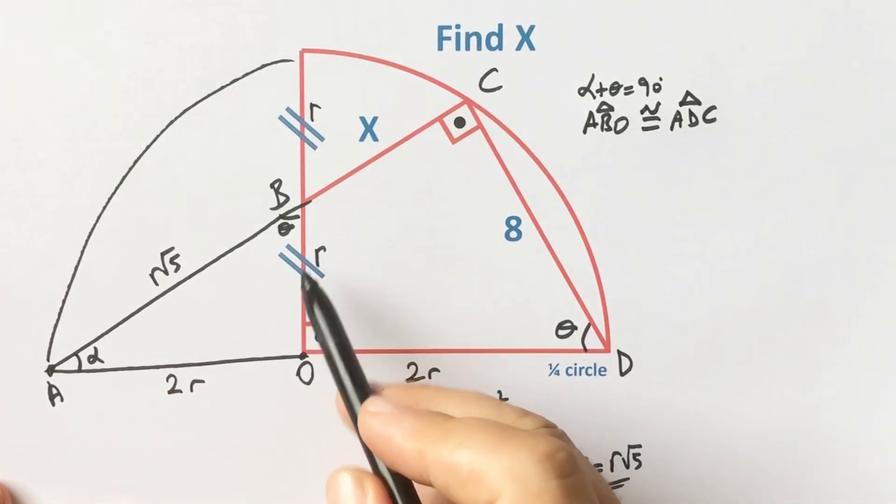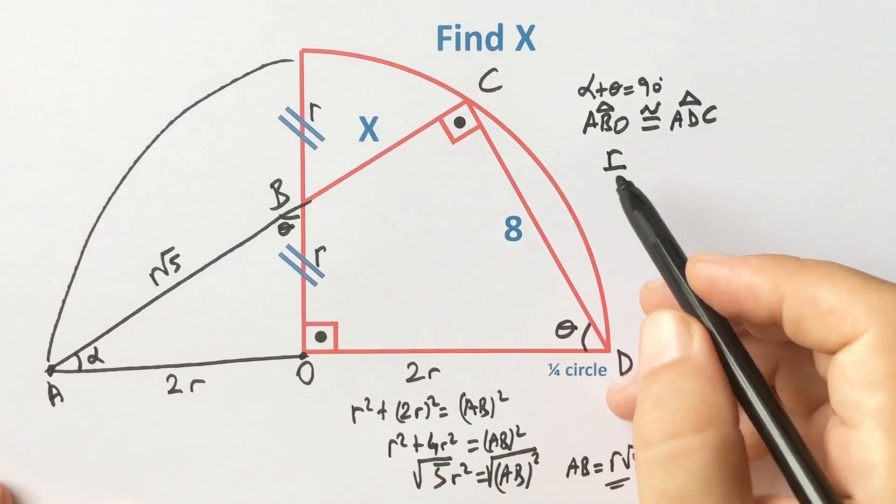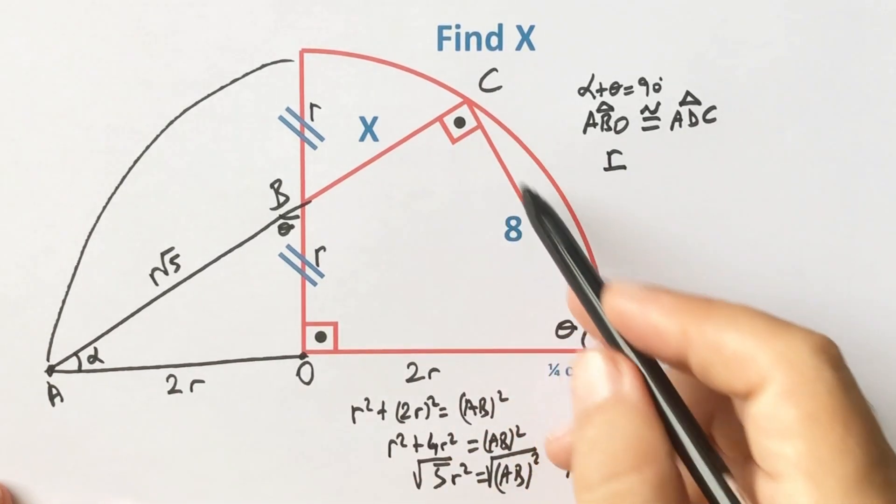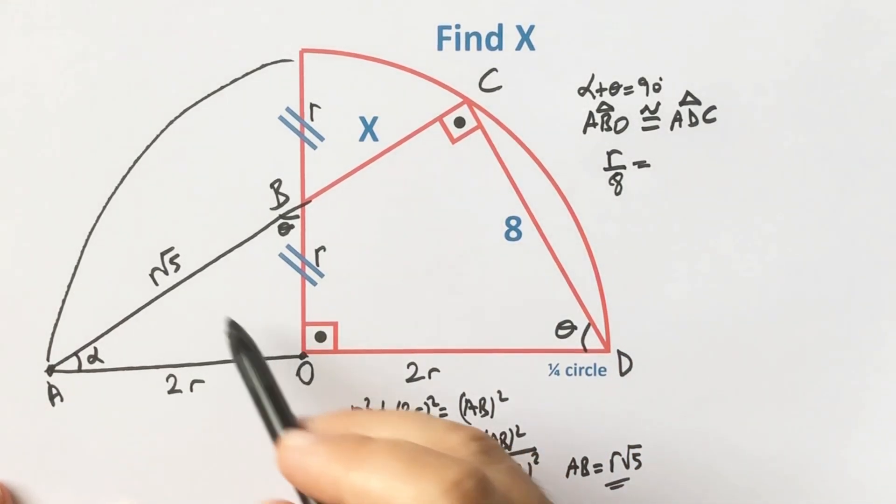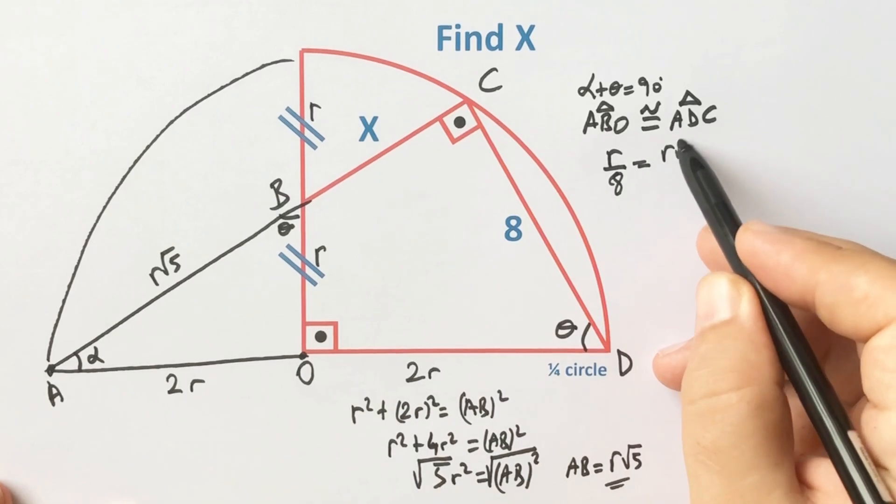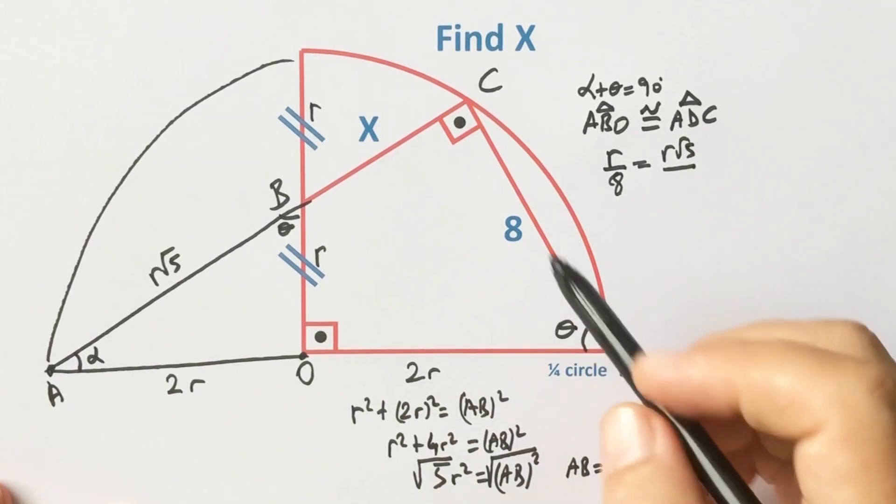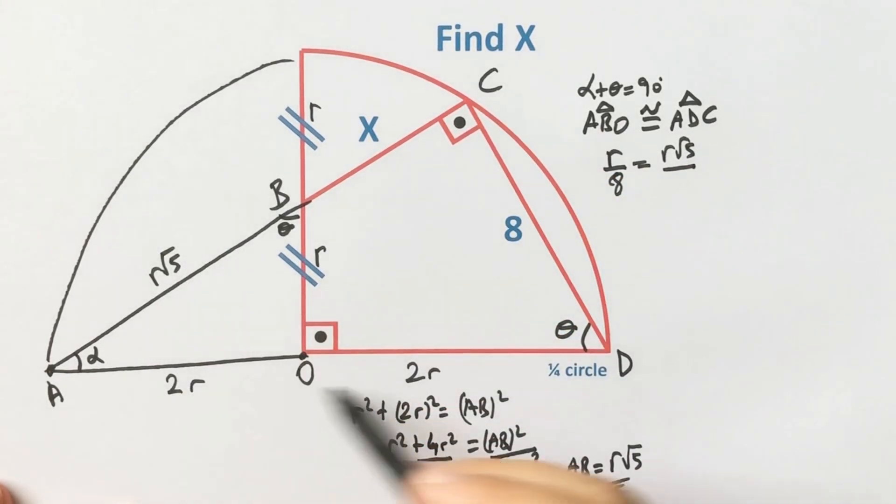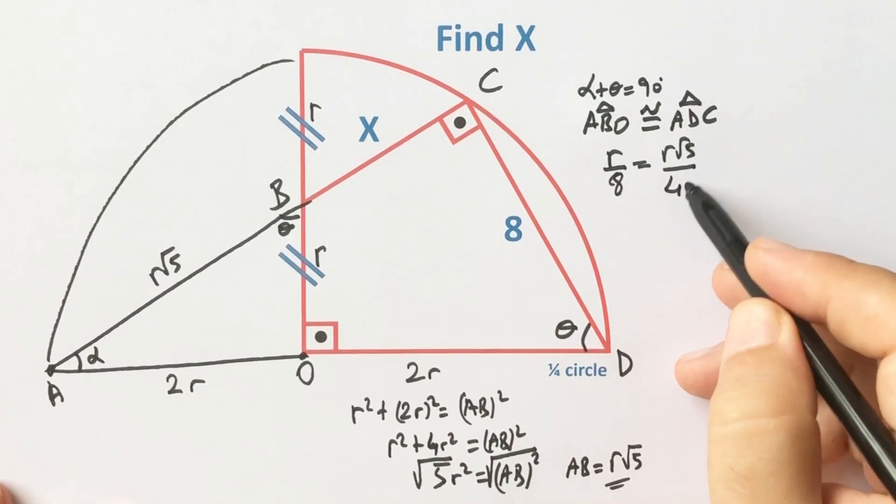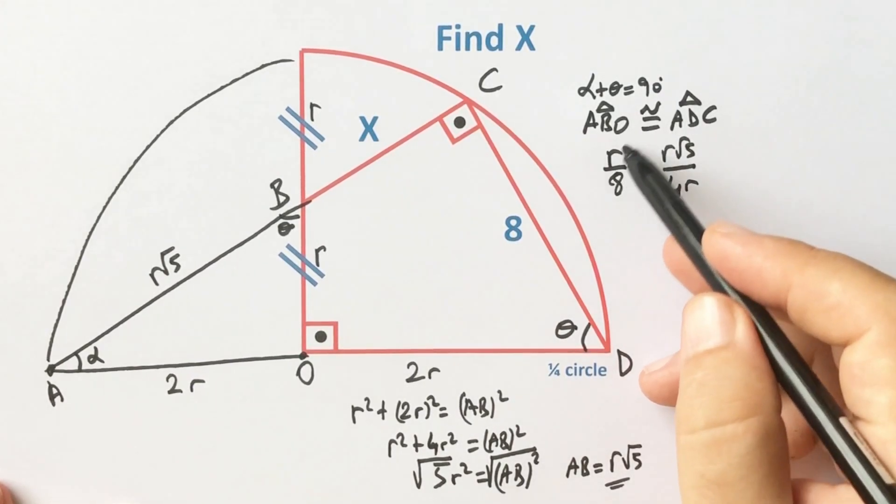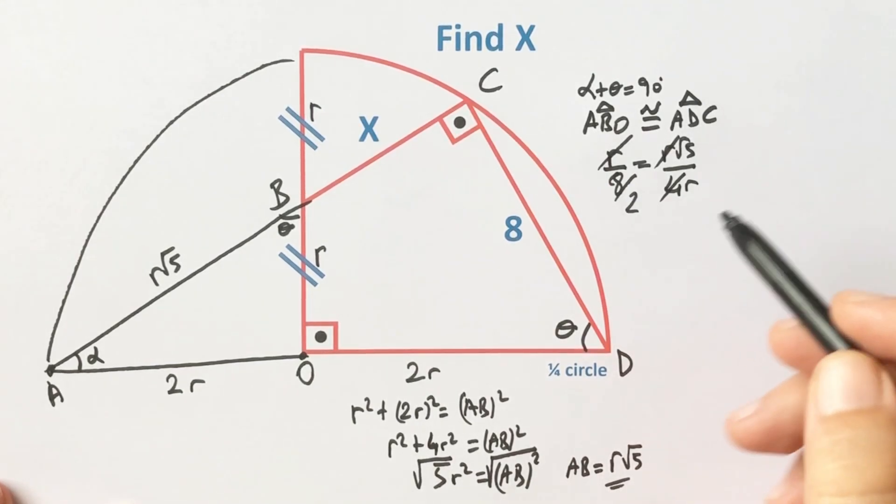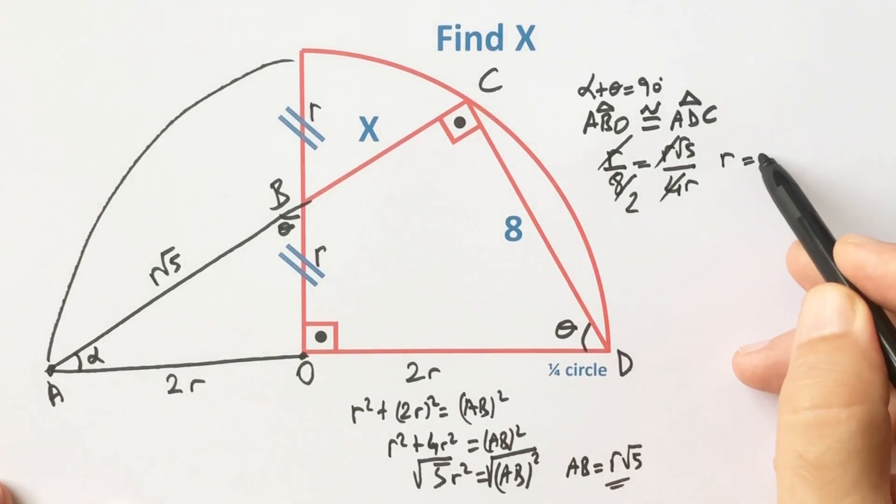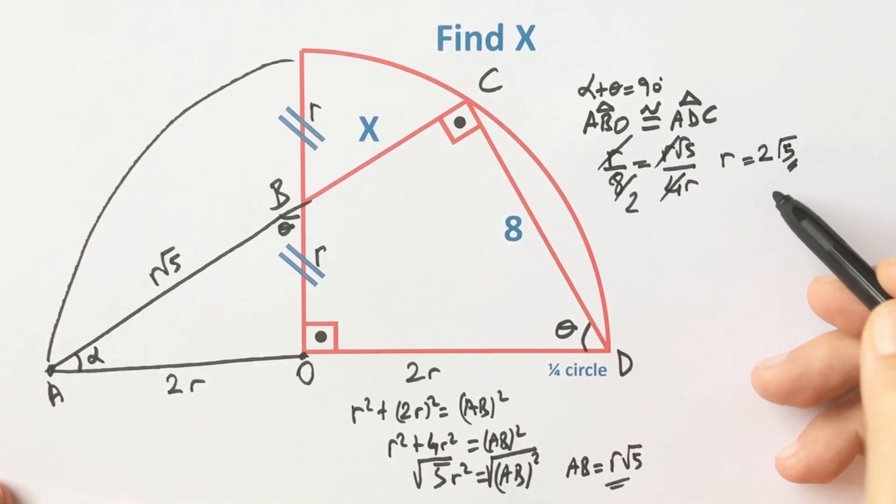So R over 8 equals R√5 over 4R. Let's simplify the expression: R equals 2√5.